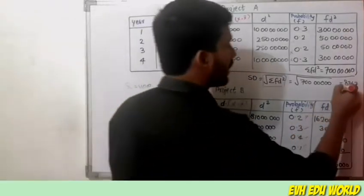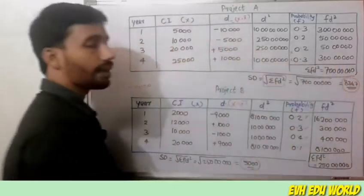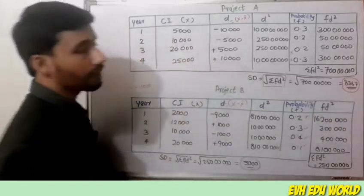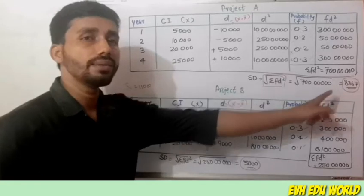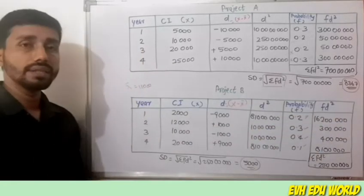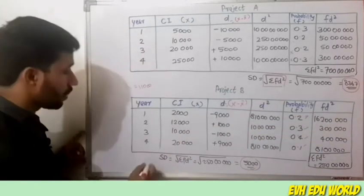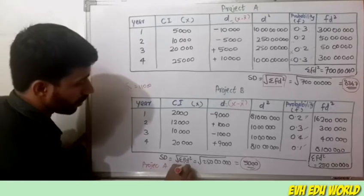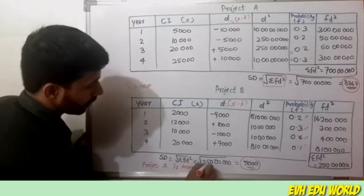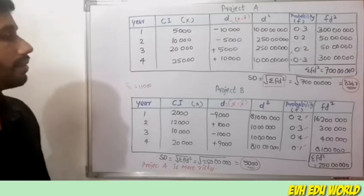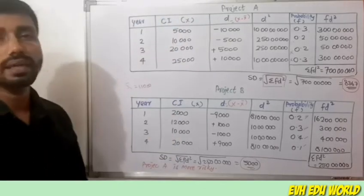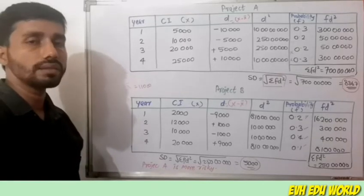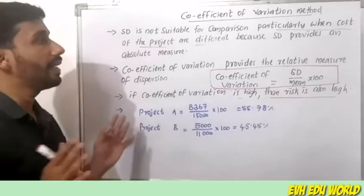Comparing the two: SD of Project A = 8,367 and SD of Project B = 5,000. Since Project A has the higher standard deviation, Project A is more risky. This is the conclusion of the Standard Deviation method for capital budgeting decisions.